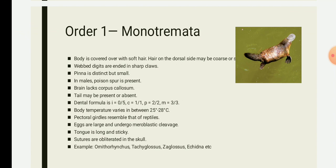The body temperature varies between 25 to 28 degrees Celsius. Monotremata is said to be a link between the reptiles and mammals. They will have a pectoral girdle that resembles that of a reptile. They are egg-laying. The eggs are large and undergo meroblastic cleavage. The tongue is long and sticky.